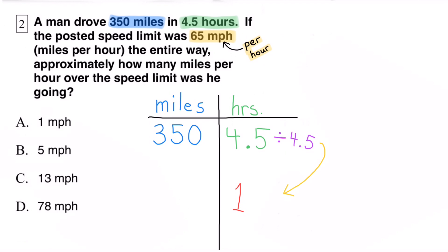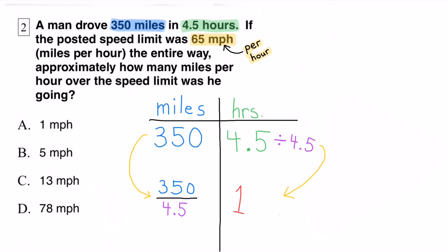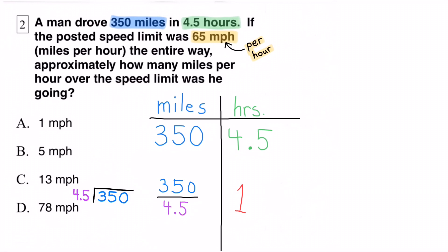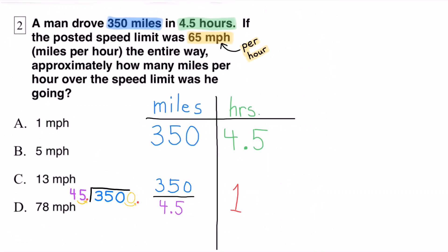4.5 hours divided by 4.5 equals 1. Since we made 4.5 hours 4.5 times smaller by dividing it by 4.5, we need to do that to the miles side as well. So 350 divided by 4.5. 350 divided by 4.5 can be written like this: you'd have to move the decimal all the way to the right.